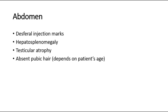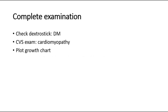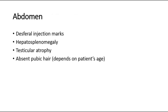For male patients, we look for testicular atrophy and absent pubic hair. However, this depends on the patient's age and whether he or she has reached puberty, so in very small children we don't look for these things. Testicular atrophy and absent pubic hair are commonly seen in chronic liver disease.